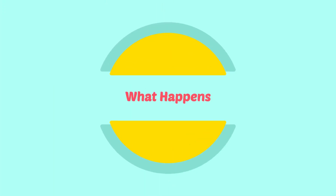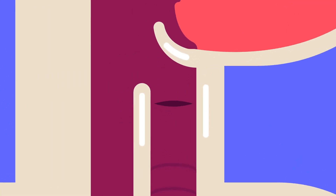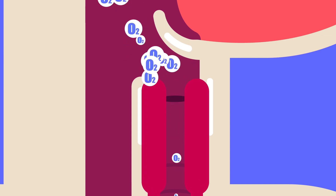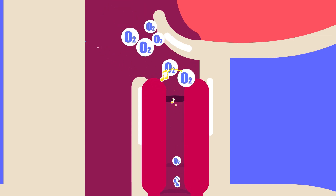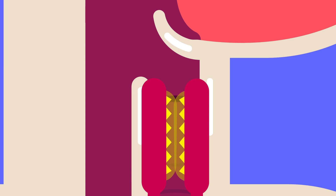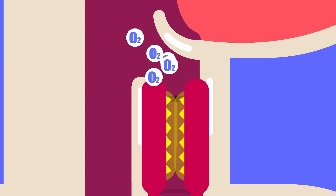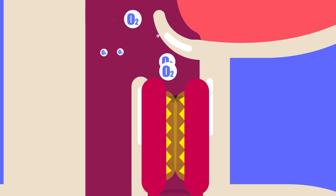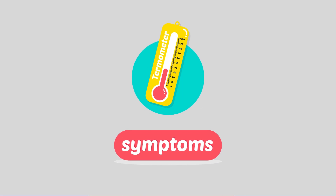What happens in acute laryngotracheobronchitis? The loose areolar tissue in the subglottic region swells up and causes respiratory obstruction and stridor. This, coupled with thick tenacious secretions and crusts, may completely occlude the airway.